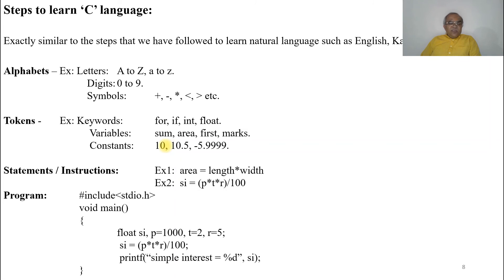Then we have tokens, such as: keywords — for, if, int, float, etc.; variables — sum, area, first, marks, etc.; and constants — like 10, 10.5, -5.4, and so on.